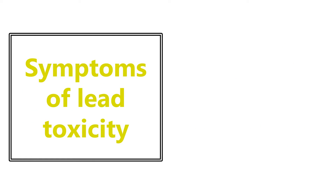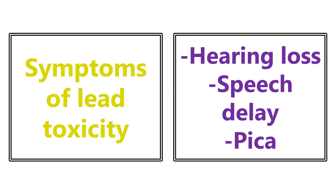Symptoms of lead toxicity: hearing loss, speech delay, and pica — that's a craving for eating non-food items like ice or sand. A classic vignette is a child living in a very old home with chipped paint on the walls, and the child has been eating the paint. That's how they're getting the lead toxicity, and they typically have these symptoms.